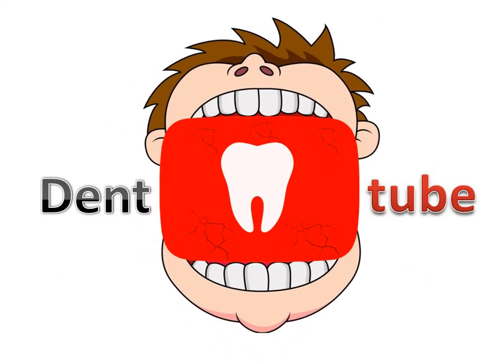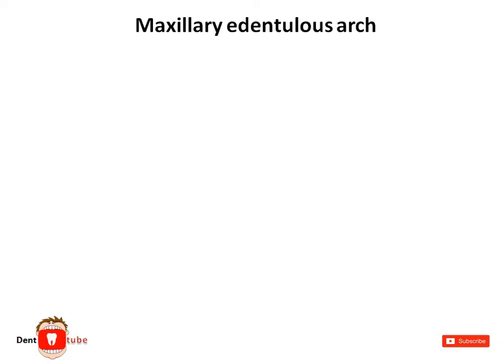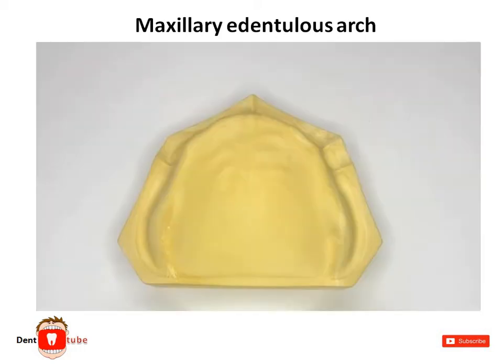Hi, this is Dentube. Today I'm going to explain about the maxillary edentulous arch. Let's begin with some anatomical landmarks present in the maxillary edentulous arch. A fibrous band that extends from the labial aspect of the residual ridge to the lip is known as the labial frenum.